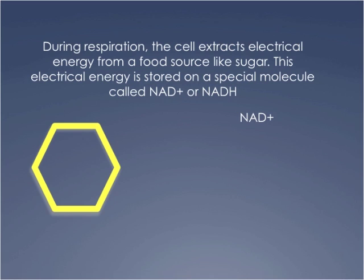This yellow hexagon represents glucose, an energy-rich molecule. The cell is going to extract energy from this sugar molecule. The energy being extracted is actually electrical energy — very similar to the electrical energy that runs your computer or a fan. Just like a battery stores electrical energy in a chemical form, sugar is a way of storing electrical energy in a chemical form.